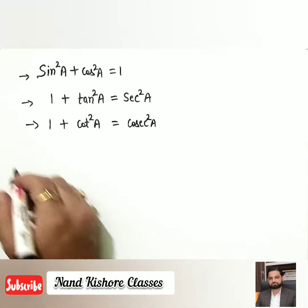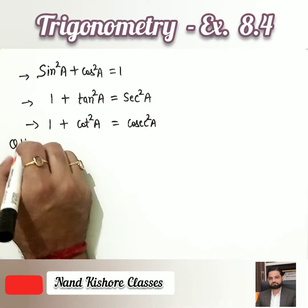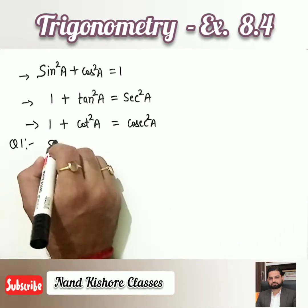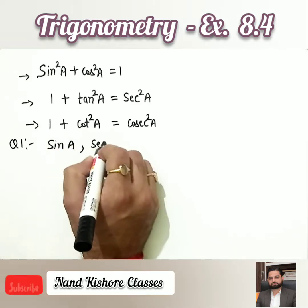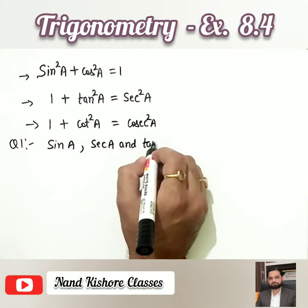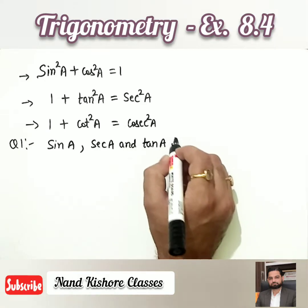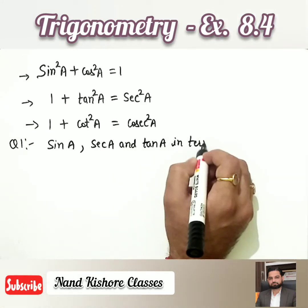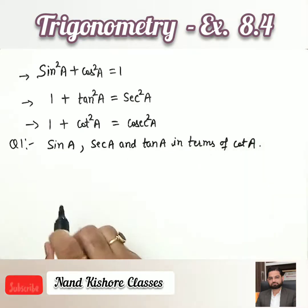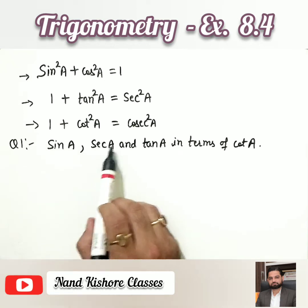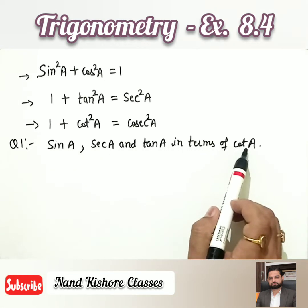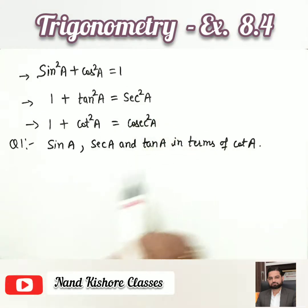Do remember these formulas. Let us start Question 1. Question 1 asks us to express the trigonometric ratios sin A, sec A, and tan A in terms of cot A. We have these three formulas available to do all the transformations.